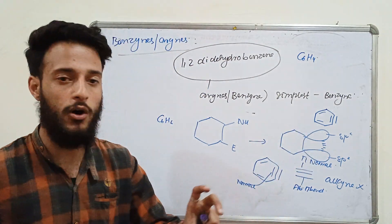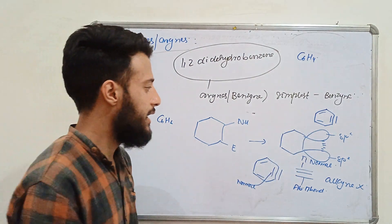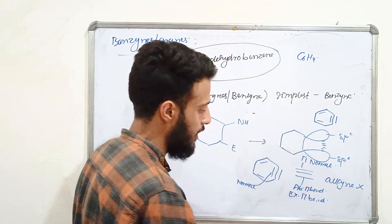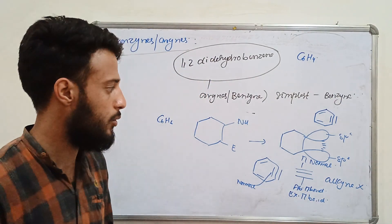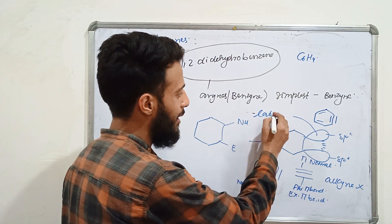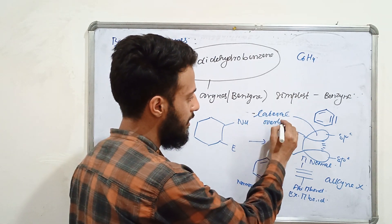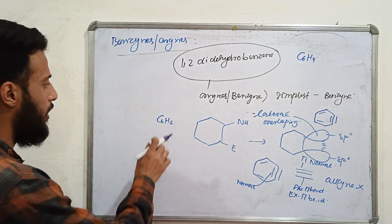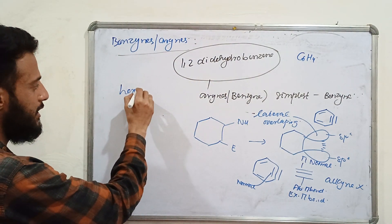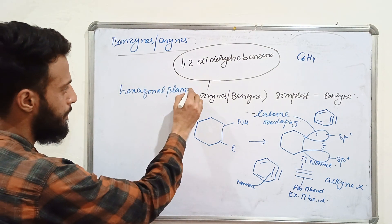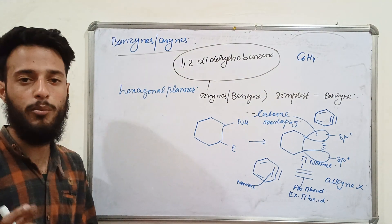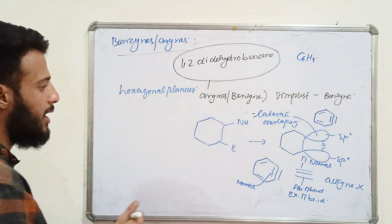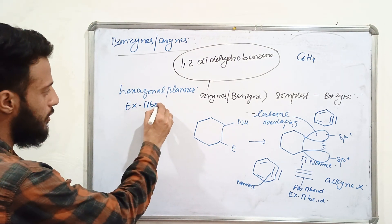This abnormal pi bond forms when two electrons are distributed into two sp2 hybrid orbitals. We also call this an external pi bond. The overlapping occurring to form this external/abnormal pi bond is called lateral overlapping. Due to this lateral overlapping, the external pi bond is formed. Benzyne has a hexagonal planar structure with two pi bonds — one external (abnormal) pi bond and one normal pi bond.